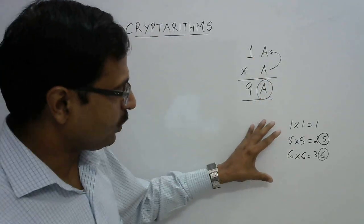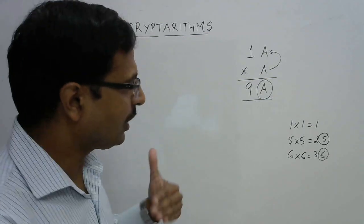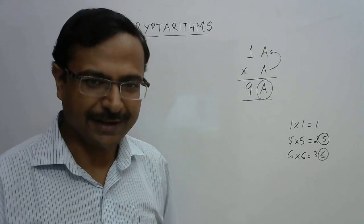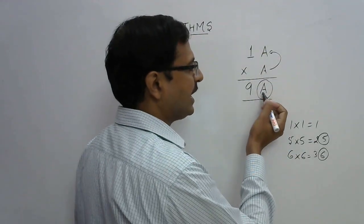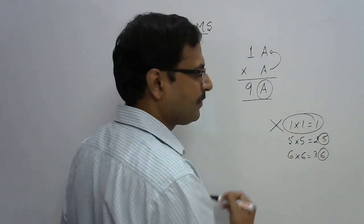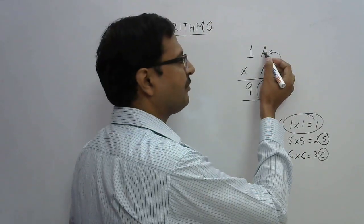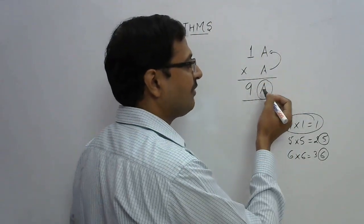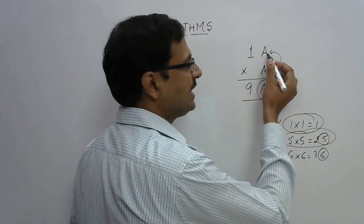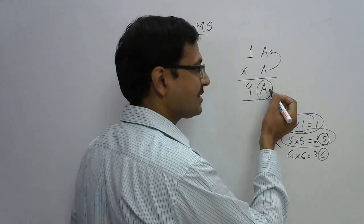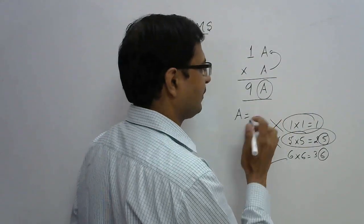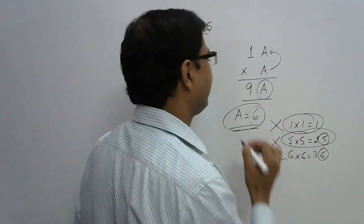Out of these three possibilities, we use hit and trial. Take them one by one and eliminate wrong responses. If a=1, this becomes 11×1=11, not 91 — cancelled. If a=5, this becomes 15×5=75, not 95 — cancelled. If a=6, this becomes 16×6=96 — that is correct! So the value of a is 6.